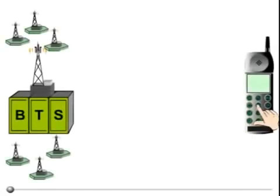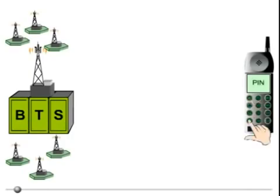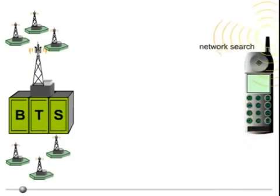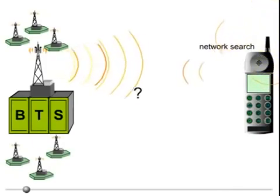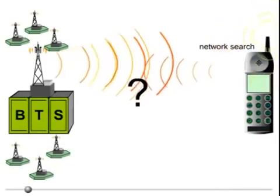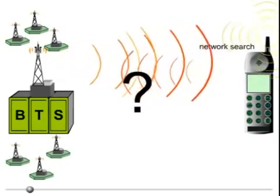After the subscriber has switched on his mobile station and typed in his PIN code, the mobile station searches for a network. But how does it log on to the network the subscriber is registered with?